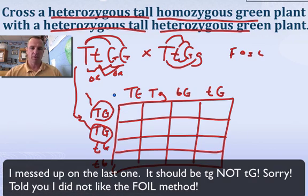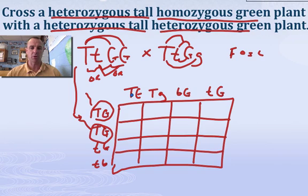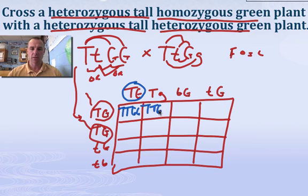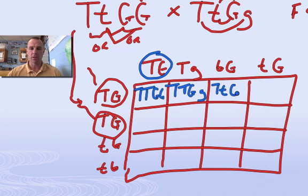Once we get to this point we've got it halfway done. All we do now is pull letters together. So let's see what would be in this box — if this sperm and this egg united, bring down a T and bring over a T. That individual's going to be big T, big G, big G: tall and green. The next square: big T, big T, big G, little g — tall and green. The next: big T, little T, big G, big G — tall and green. The next: big T, little T, big G, big G — tall and green.